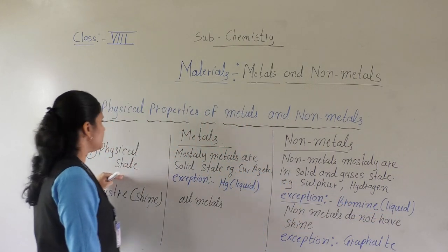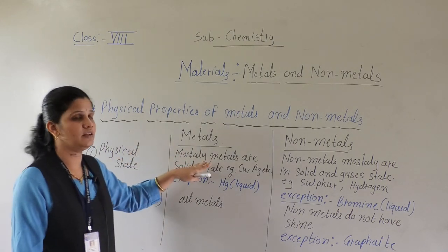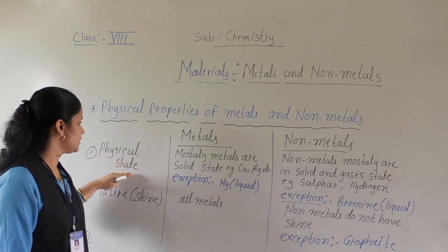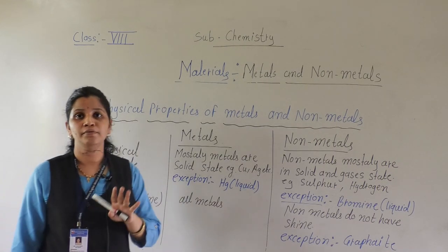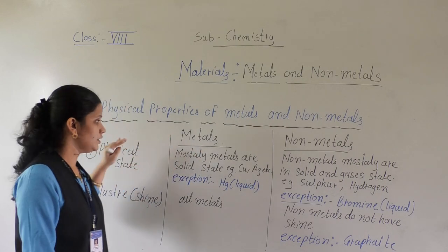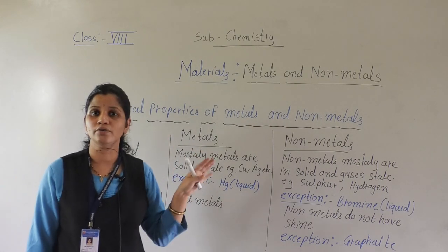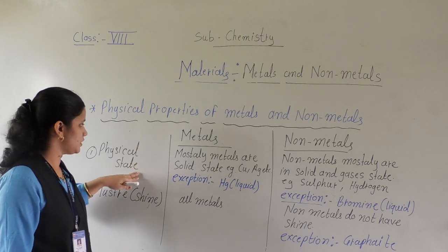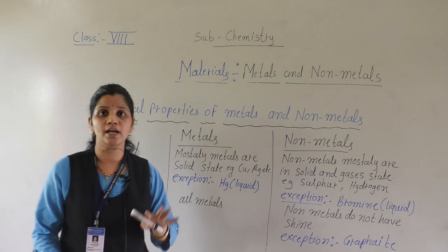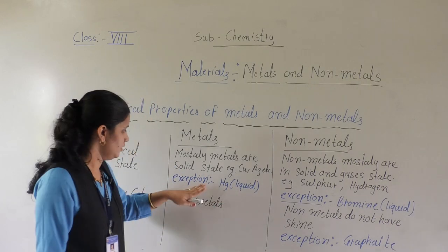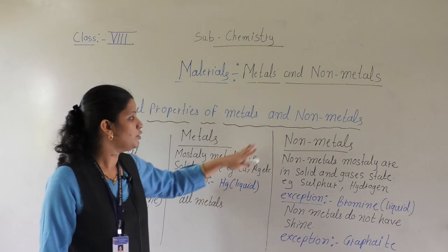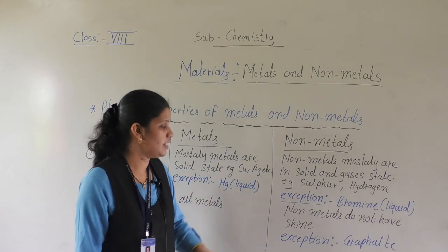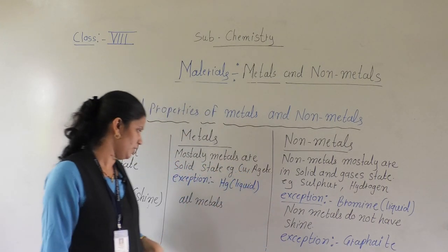So, this is the first property of metals and non-metals — which is physical state. Read carefully in your notes. After this lecture, you have to write all these points in your notebook. So, first is physical state: mostly metals are in solid state, exception mercury; non-metals are in solid and gaseous state, exception bromine.